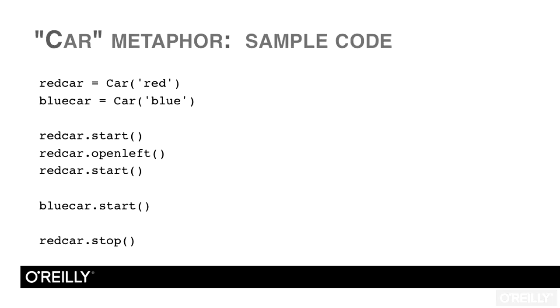The state of each car will change depending on what we call. So the red car may have an open left door and a closed right door, etc. Blue car may have started. Red car may stop. This is what we call the state. And we're going to see that it's possible to set additional attributes in each object that indicates its state.